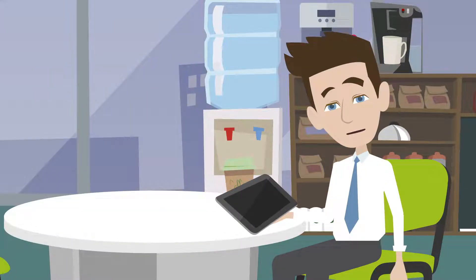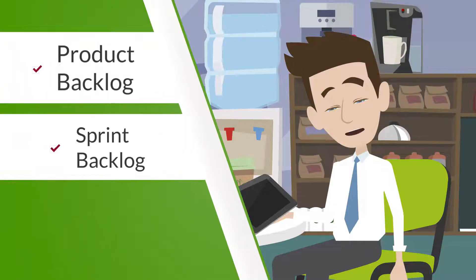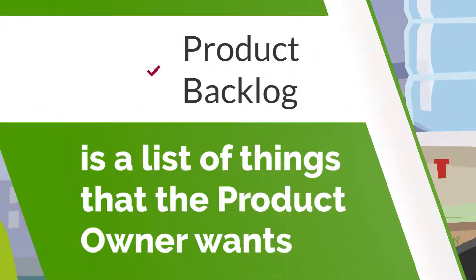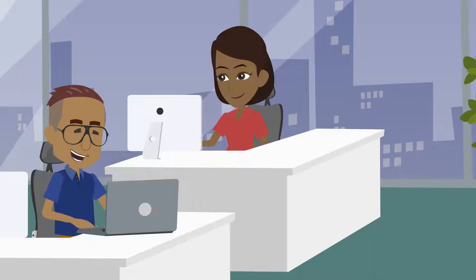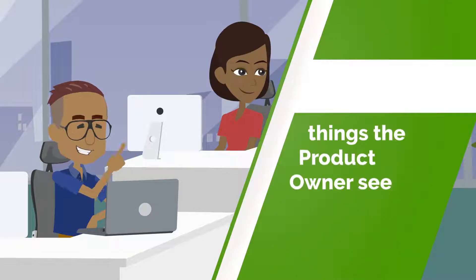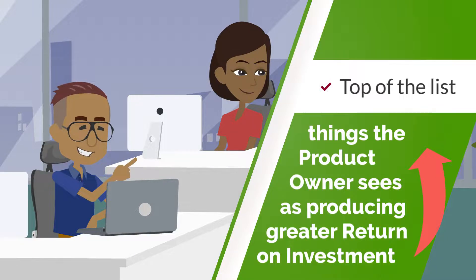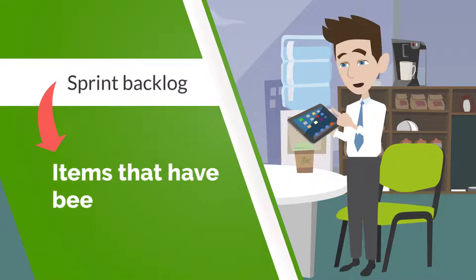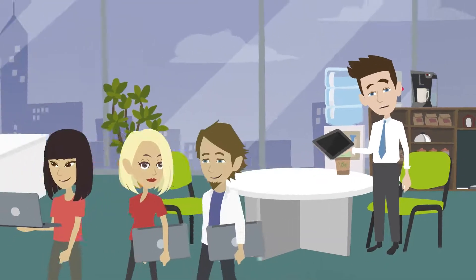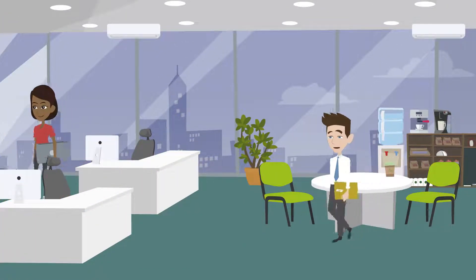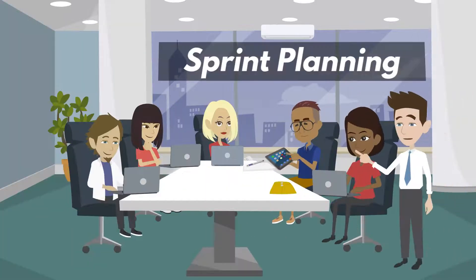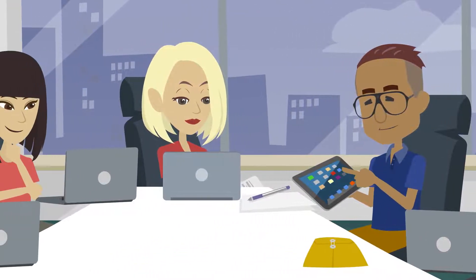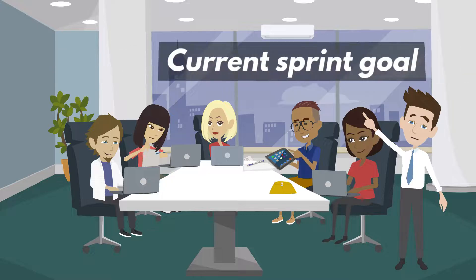Now let's look at the artifacts from Scrum. These are the Product Backlog, the Sprint Backlog, and the Increment. The Product Backlog is a list of things that the product owner wants or thinks they may want. In software, this is usually an ordered list of features with the things the product owner sees as producing greater return on investment at the top of the list. The Product Backlog is the source for the Sprint Backlog, which is the set of items selected for the current sprint. The Sprint Backlog is populated at Sprint Planning, and it helps keep the team focused on just what is needed for the current sprint without the added noise of everything in the full product backlog. The Sprint Backlog provides a great deal of transparency in understanding the progress being made toward the current sprint goal.